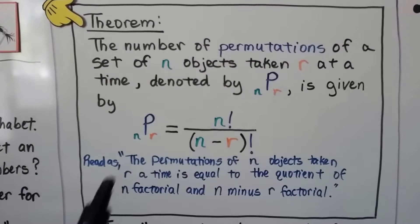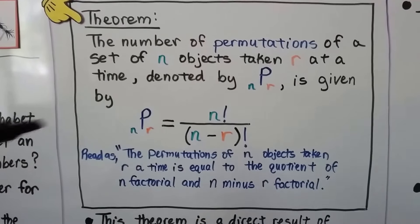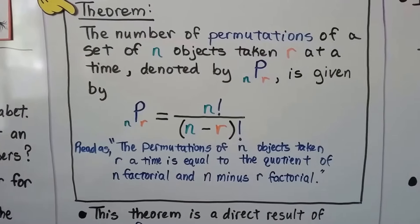We read this as the permutations of n objects taken r at a time is equal to the quotient of n factorial and n minus r factorial.